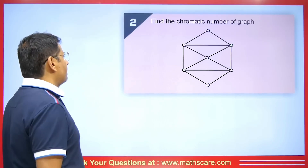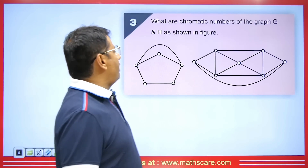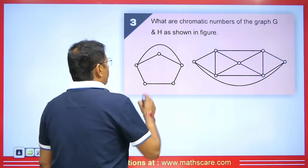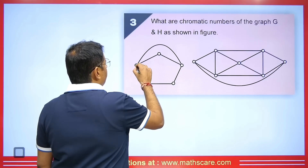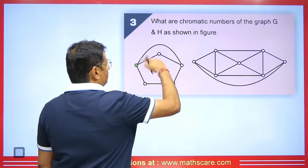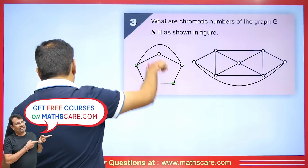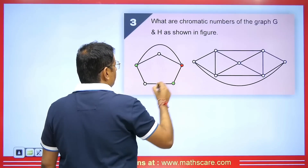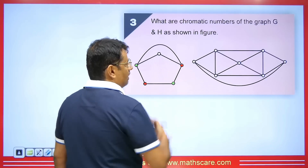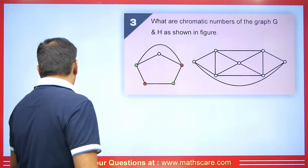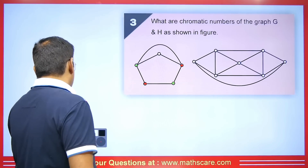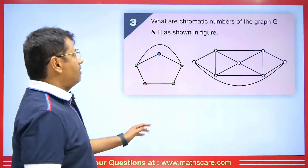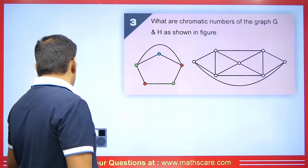The next question asks for the chromatic numbers of two graphs G and H. For graph G, I've already used one color and can reuse it for non-adjacent vertices, but not where vertices are connected to vertex H. I take red for some vertices — they are not connecting to each other — but I need another color to avoid a problem. We end up with a three chromatic graph with chromatic number three.